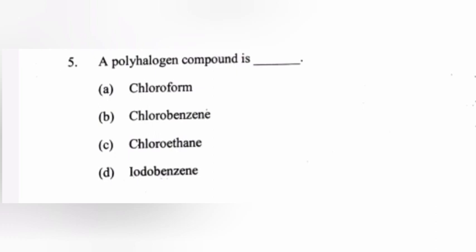Question 5: A polyhalogen compound is dash. Options: A. Chloroform, B. Chlorobenzene, C. Chloroethene, D. Iodobenzene. Answer: A, Chloroform.